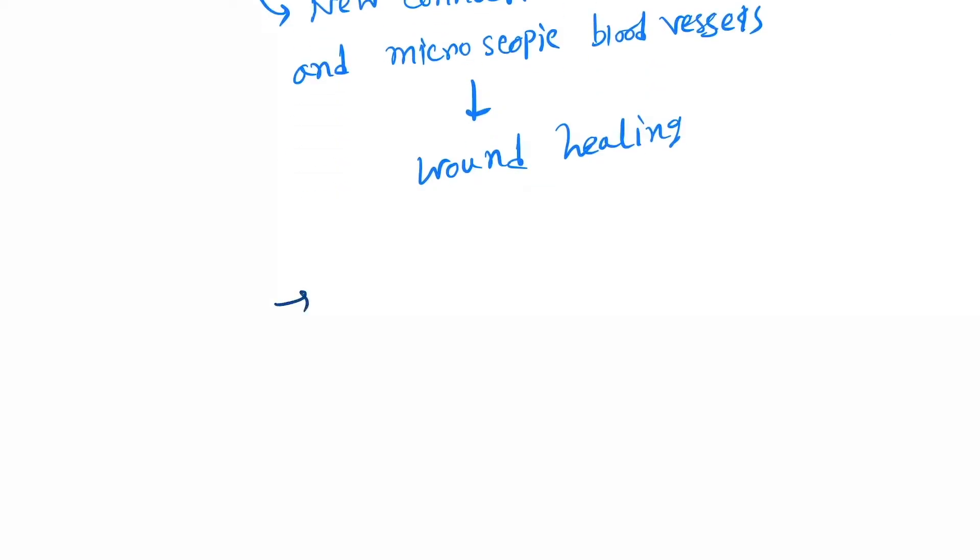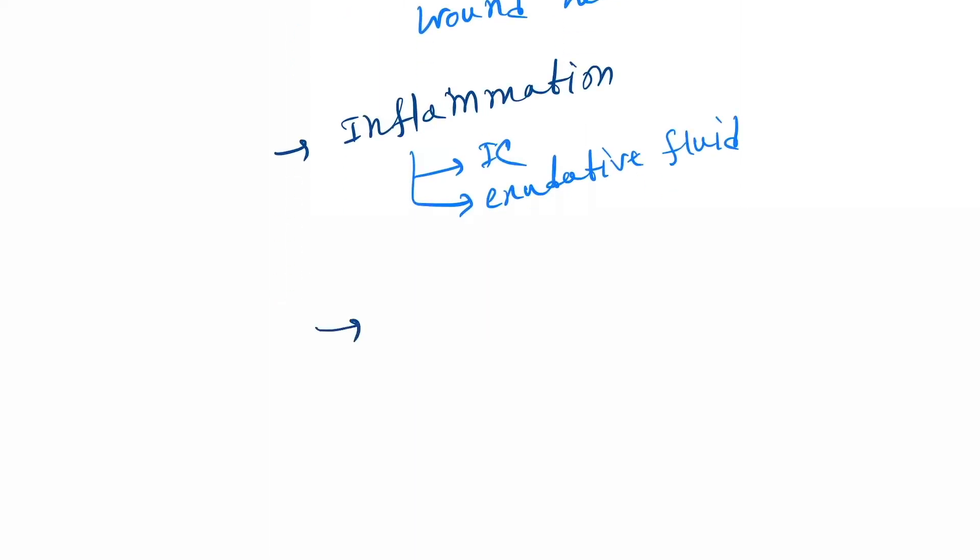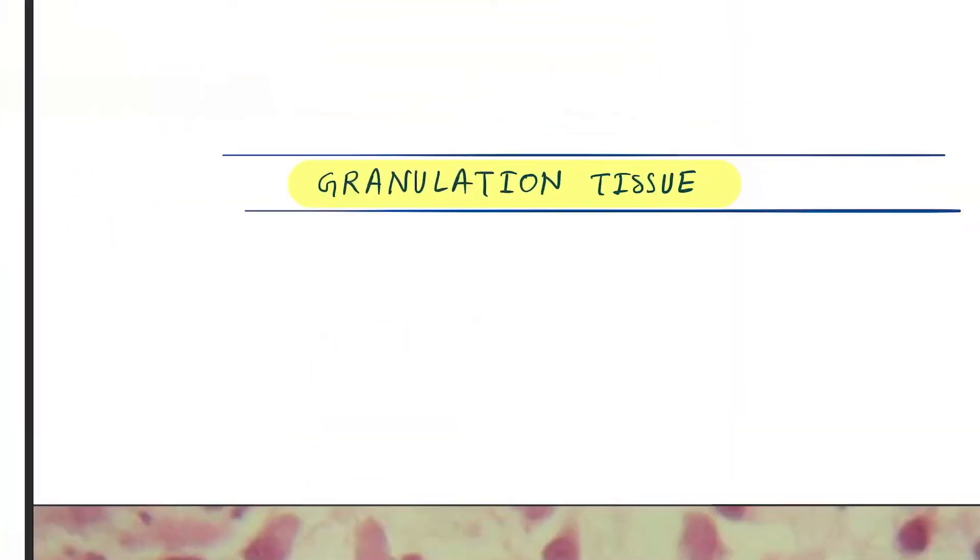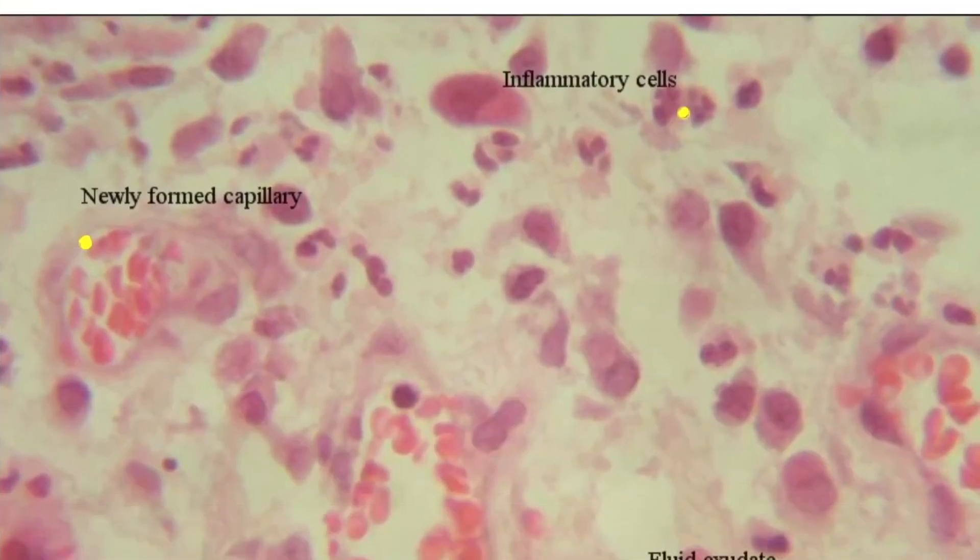Inflammation occurs, and as a result of inflammation, inflammatory cells will be present. Next is exudative fluid. New tissue is forming, so fibroblasts will be there. Let's start with a logical diagram.